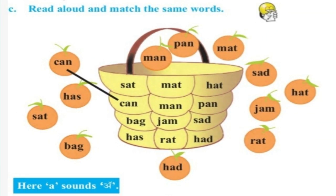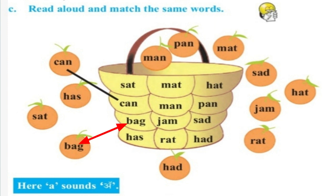Activity C: Read aloud and match the same words. Shabdanchi basket paha, woi saarkhi aksharanja zodei lava. Can, Has, Set, Bag.